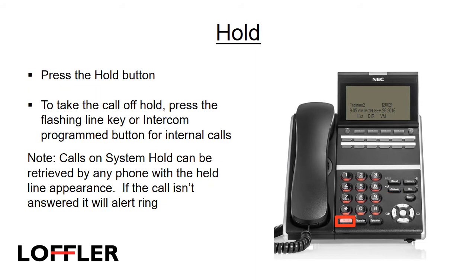To place a call on hold, press the red hold button. You can safely place the handset on hook, or press the speaker or headset button without ending the call. To take a call off hold, press the flashing line key. Calls on system hold can be retrieved by any phone with the held line appearance. After a predetermined amount of time, the call will recall to the extension that originally placed the call on hold.